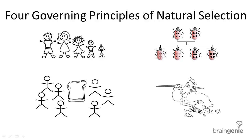So what are the four governing principles of natural selection? Natural selection was Darwin's theory of evolution, and they obviously have four principles. Let's go into depth about what each of these principles mean so we can get a better understanding of what Darwin was thinking.